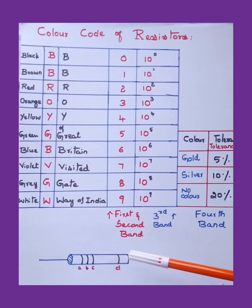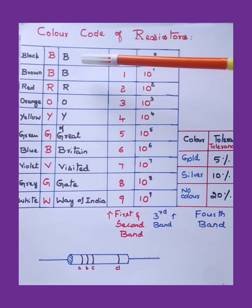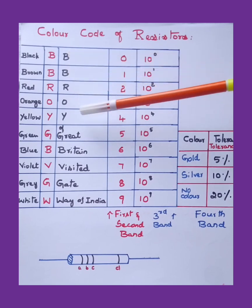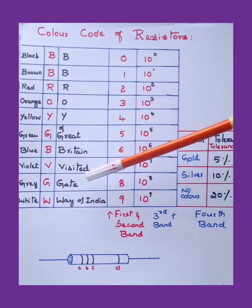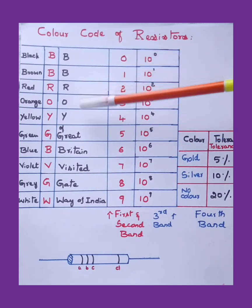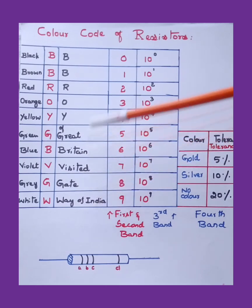And the last one indicates the tolerance value. There is an easy way to remember these colors. Actually they are in the order: black, brown, red, orange, yellow, green, blue, violet, gray, and white.